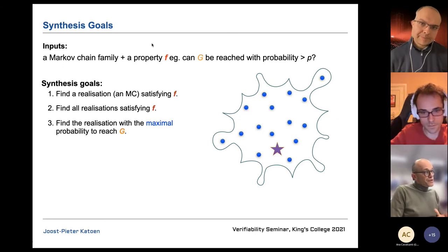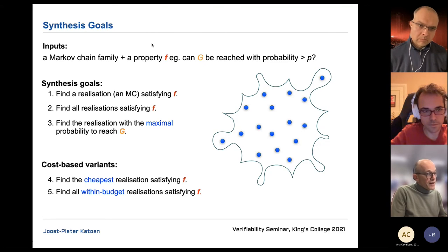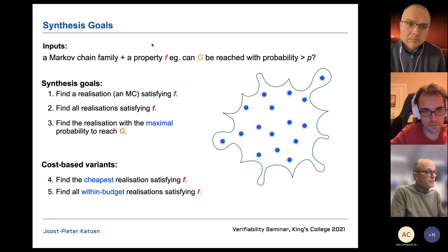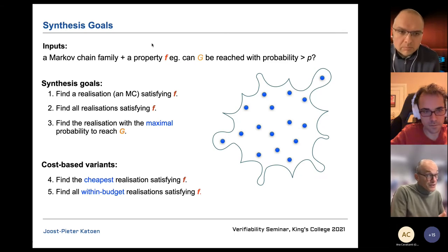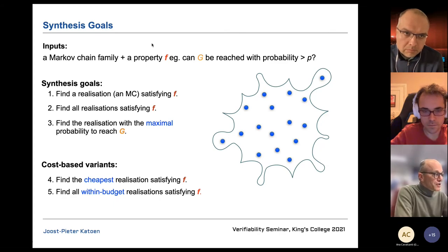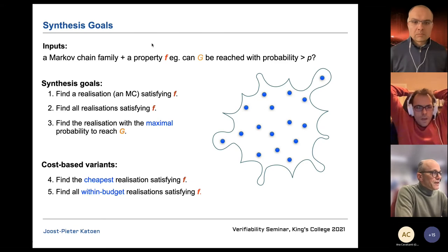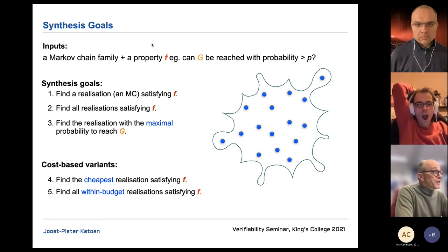You can even add costs: each instance may have a cost, and you look for the cheapest realization satisfying the property, or find all realizations within a given budget that satisfy the specification. These are the different synthesis goals we are interested in.